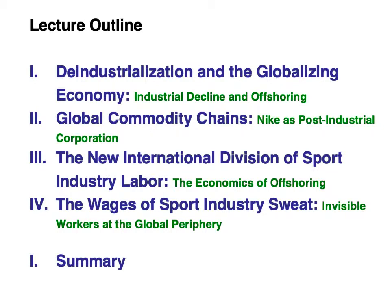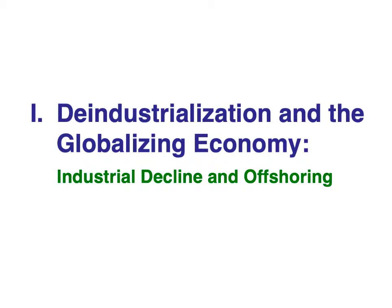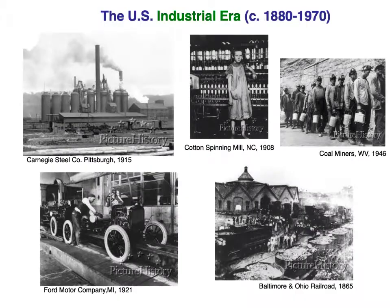We have four distinct topics in this lecture outline. The first is quite broad — we'll look at deindustrialization and the global economy, then the sports industry more specifically. The U.S. industrial era of mass industrial production lasted roughly between 1880 and 1970. It's not that there is no industrial production in the U.S. anymore, but it's not at the same level as before. From the 1970s onward, we can see a definite decline in those sectors of mass-heavy industrial manufacturing.